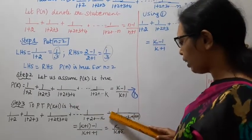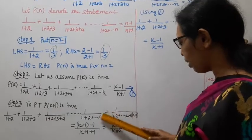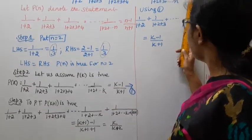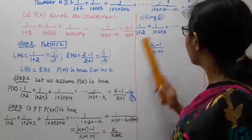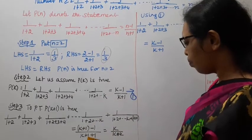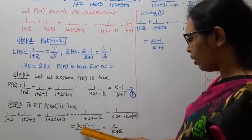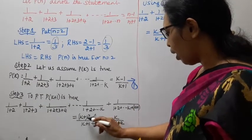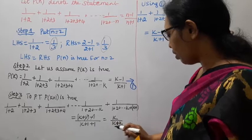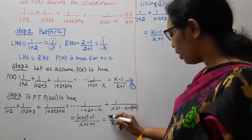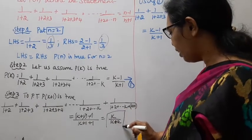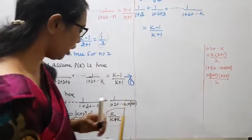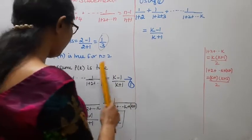k+1, k+1 — cancel — giving k+1 into k+2. This is the answer we will arrive at: k/(k+2), using the assumption.